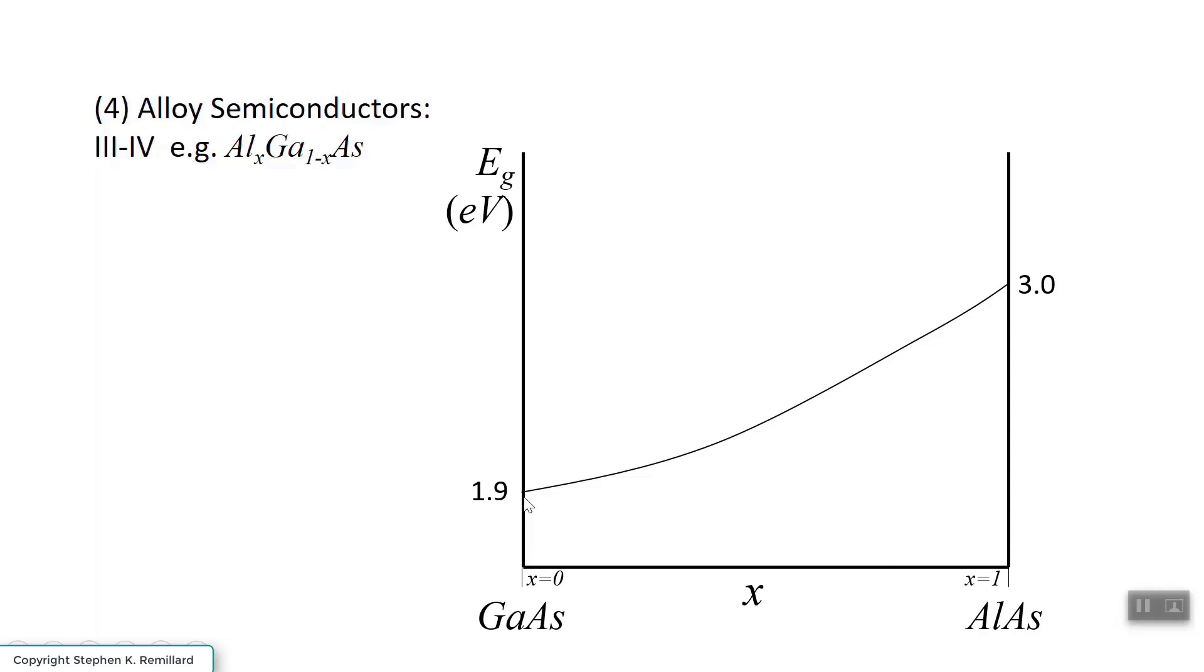What we have a graph of is the bandgap versus X. So at pure gallium arsenide, you have a bandgap of 1.9 electron volts. And at pure aluminum arsenide, you have a bandgap of 3.0 electron volts. Bandgap is the most important characteristic figure of merit for semiconductors. And for most useful materials, it can be found to be between 1 and maybe 4 electron volts.